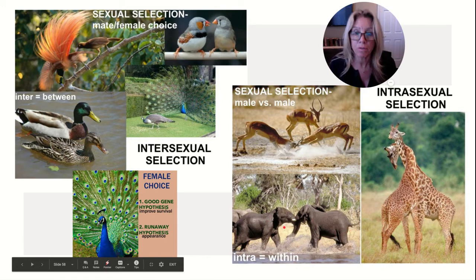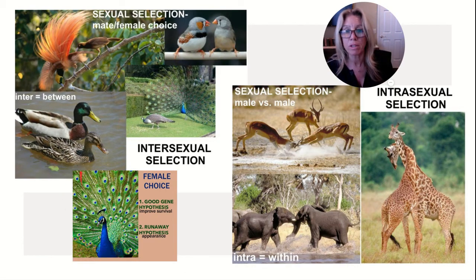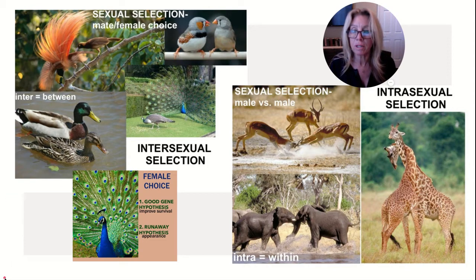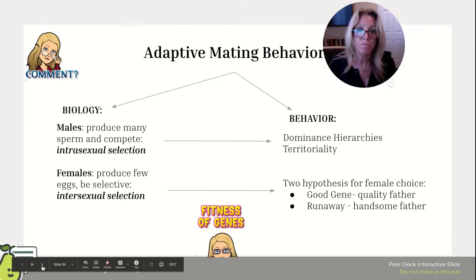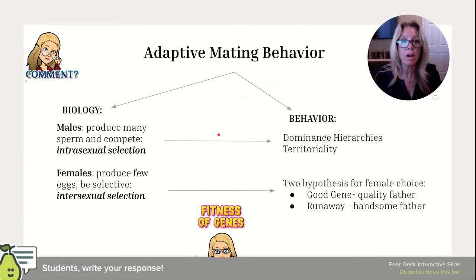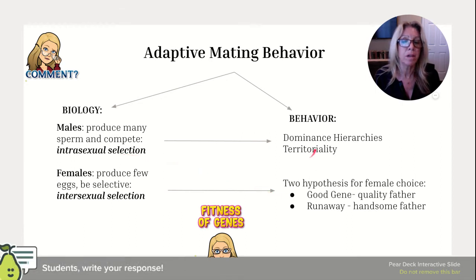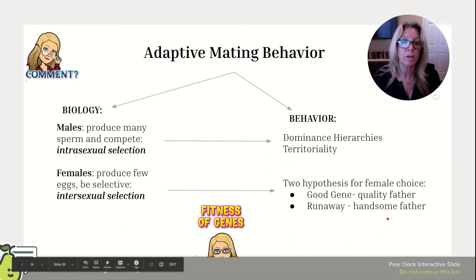We have two hypotheses for why a female chooses: the good gene hypothesis — she's looking for the biggest and strongest — and intrasexual competitions may lead to that. In polygamous situations, these competitions might lead to males controlling access to females. The runaway hypothesis is when she's looking for somebody really sparkly or colorful. Intrasexual selection leads to dominance hierarchies and territoriality, while intersexual selection involves female choice.